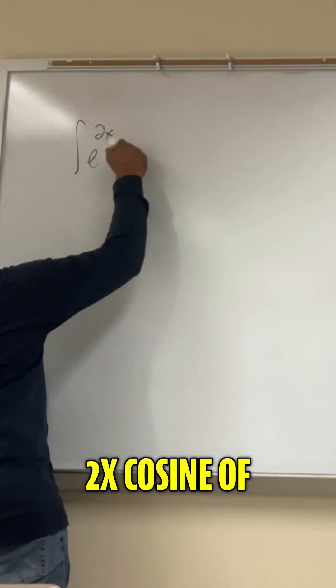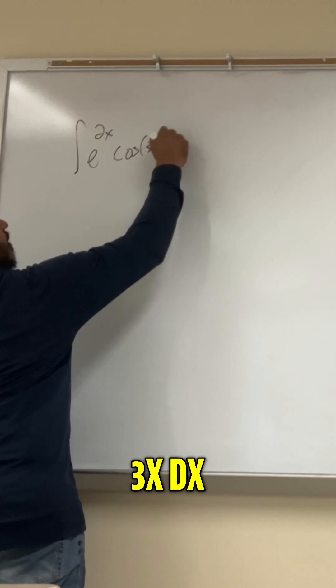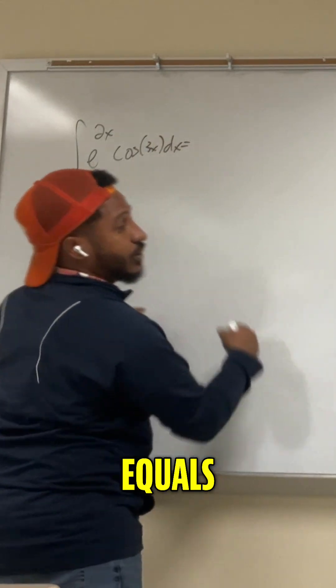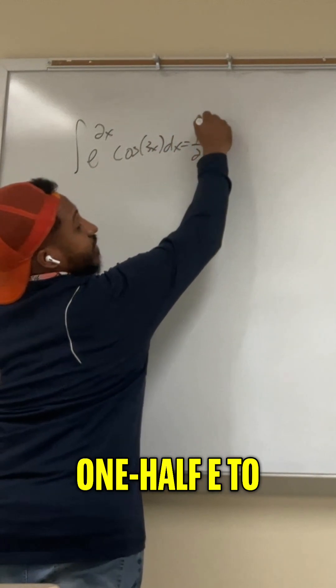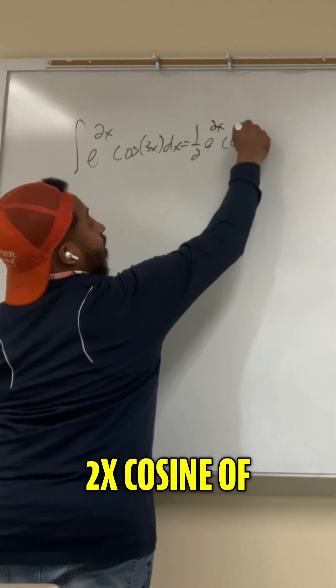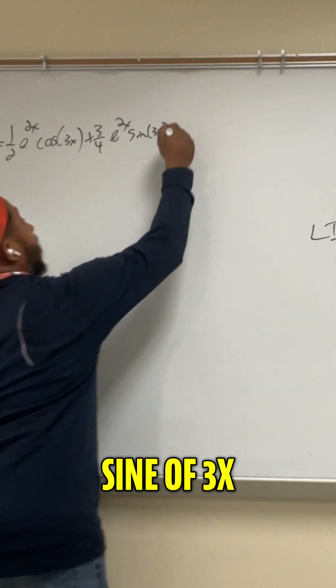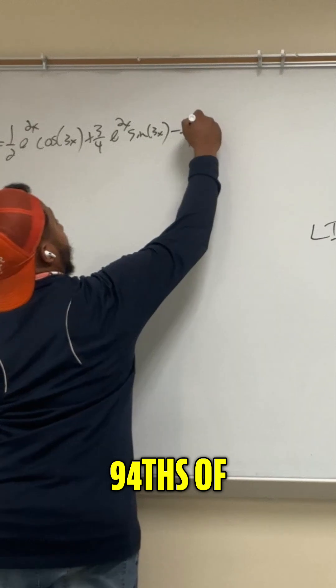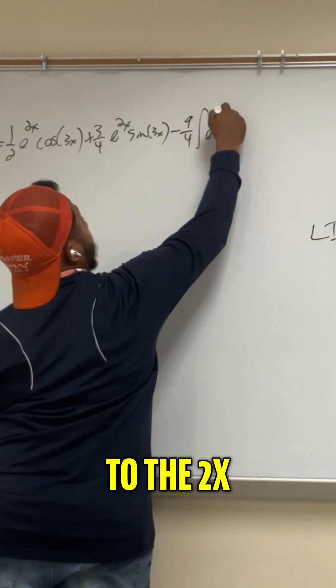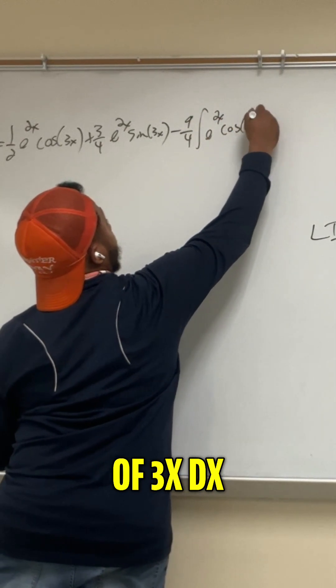The integral of e to the 2x cosine of 3x dx. And we're saying this equals 1 half e to the 2x cosine of 3x plus 3 fourths e to the 2x sine of 3x, then minus 9 fourths of the integral of e to the 2x cosine of 3x dx.